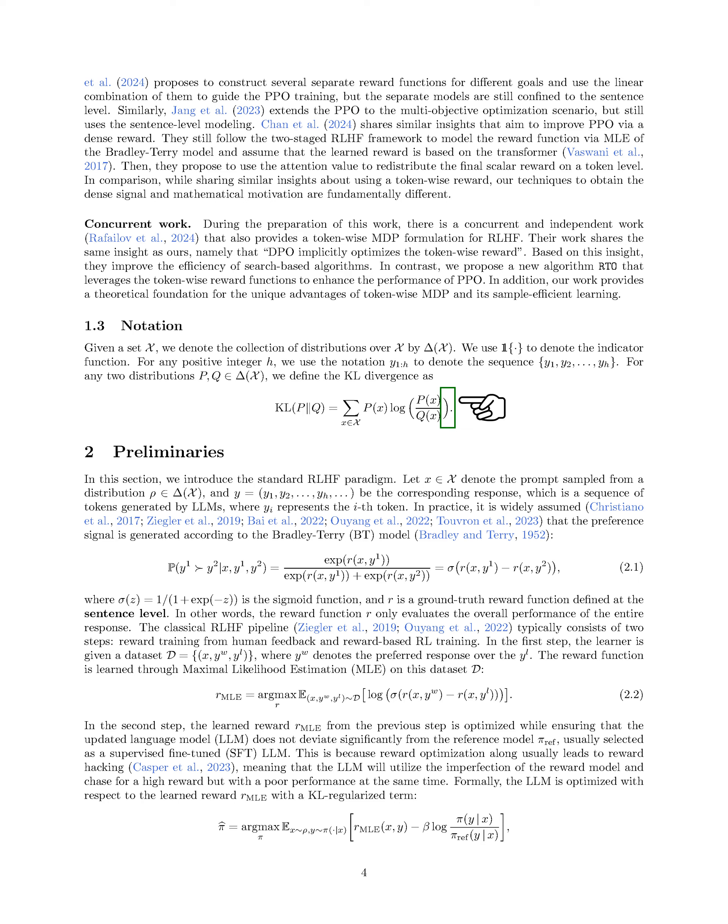In the first step, we are given a dataset D = {X, Y_win, Y_lose}, where Y_win is the preferred response over Y_lose. The reward function is learned through maximum likelihood estimation, MLE, on this dataset. In the second step, the learned reward is optimized while ensuring that the updated LLM remains close to a reference model P_ref. This is done by adding a KL-regularized term to the optimization target, which helps balance reward optimization and staying close to the reference policy.